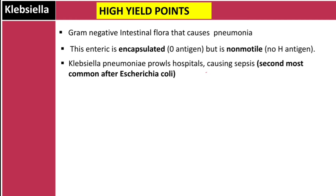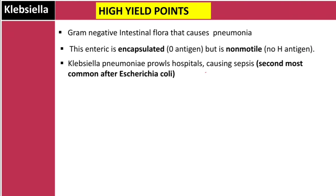Klebsiella pneumoniae is the second most common cause of gram-negative sepsis after E. coli. Number one is E. coli, number two is Klebsiella. Regarding lactose fermentation — like E. coli, Klebsiella also ferments lactose at a fast rate.